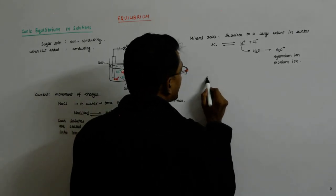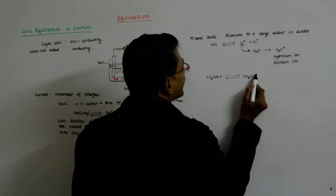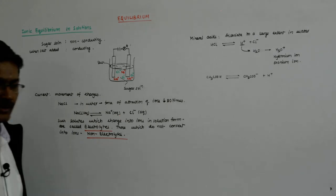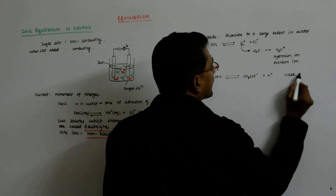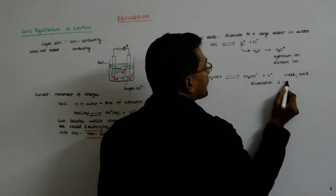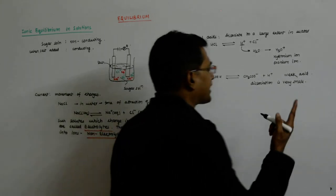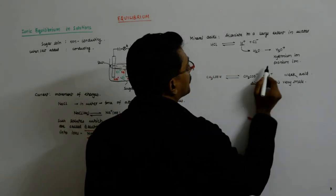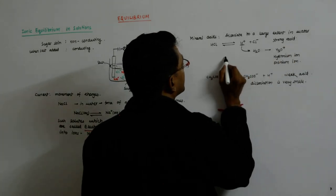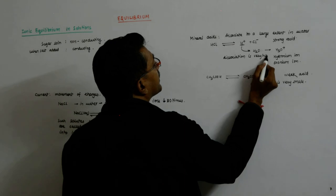In contrast, if you have got CH3COOH, this dissociates to a lesser extent in liquid, and that is why this is a weak acid. Most of the organic acids are weaker, very weak, but pretty strong compared to many other acids. So dissociation is very small. Here it is a very strong acid. Why? Because the dissociation is very high.